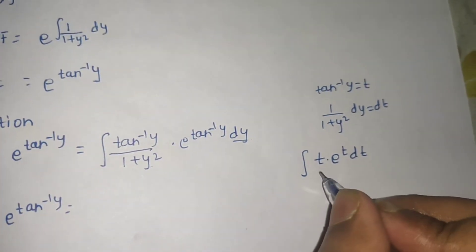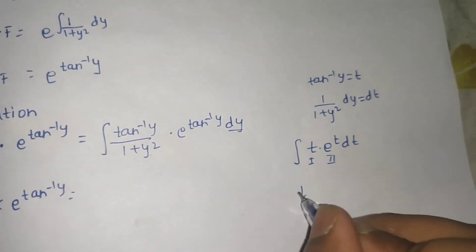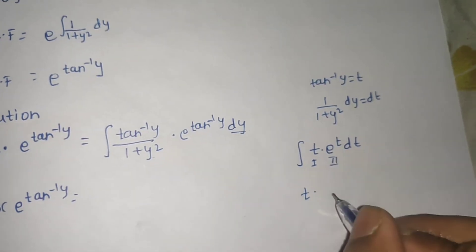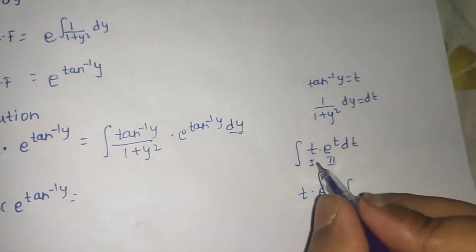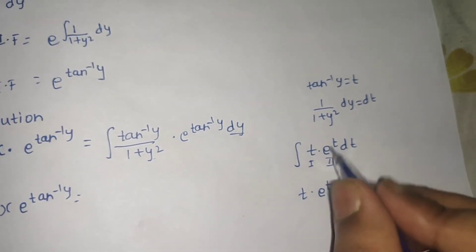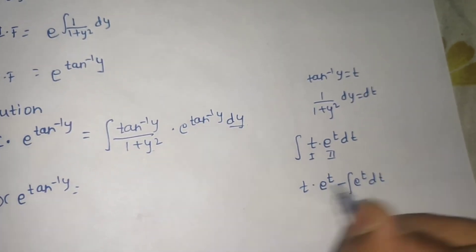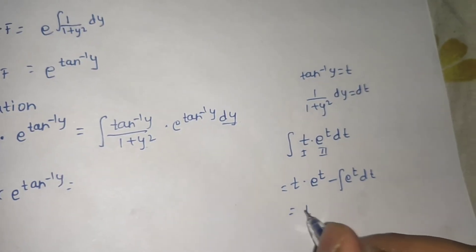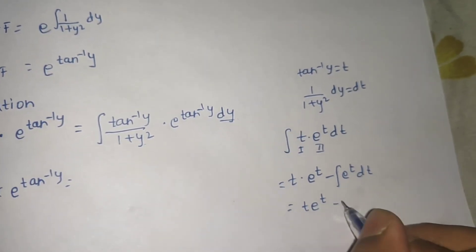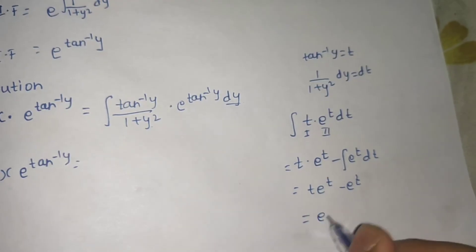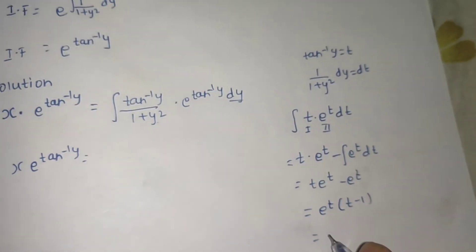According to the ILATE rule, I take t as the first function and eᵗ as the second. So: t times the integral of eᵗ, which is eᵗ, minus the integral of the derivative of t, which is 1, times eᵗ dt. This gives t·eᵗ minus eᵗ.